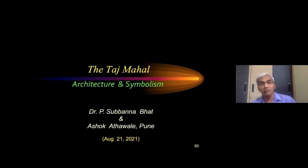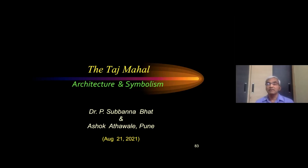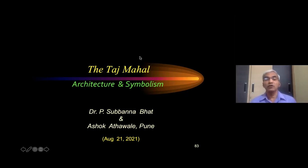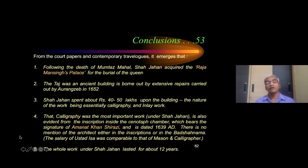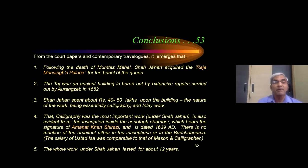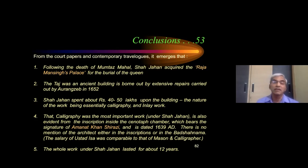In addition, there are four farmans, which means the court orders of Shahjahan, which refer to the acquisition of marble after he began his work on the marble edifice. From the court documents and the contemporary travelogues, the following conclusions emerge. I have listed five of them. Following the death of Mumtaz Mahal, Shahjahan acquired Raja Man Singh's palace for the burial of the Queen.